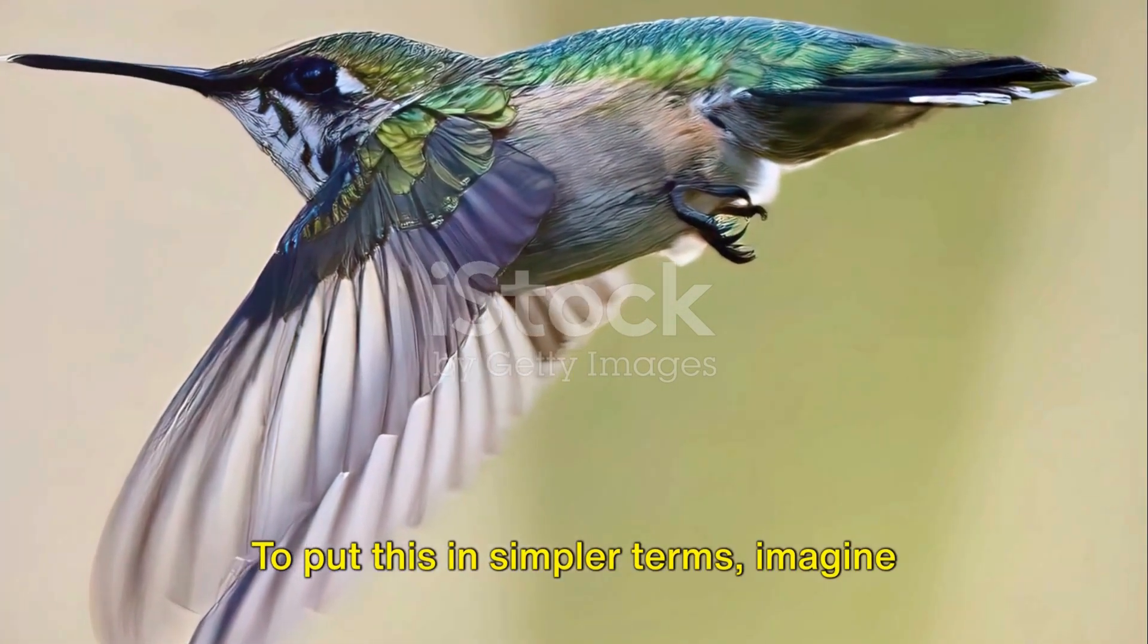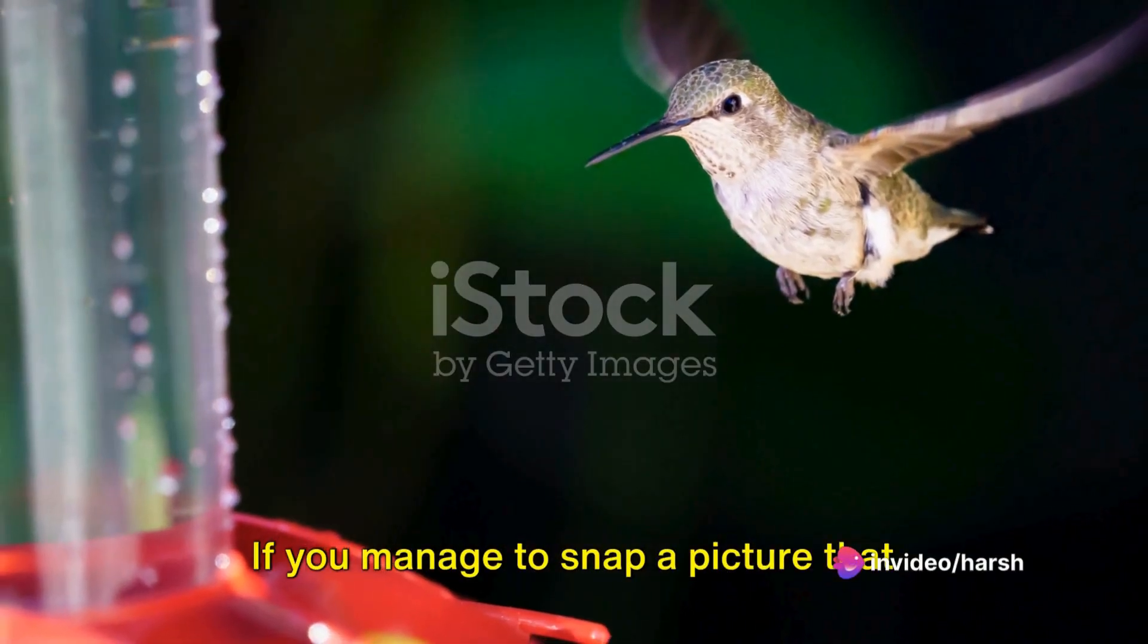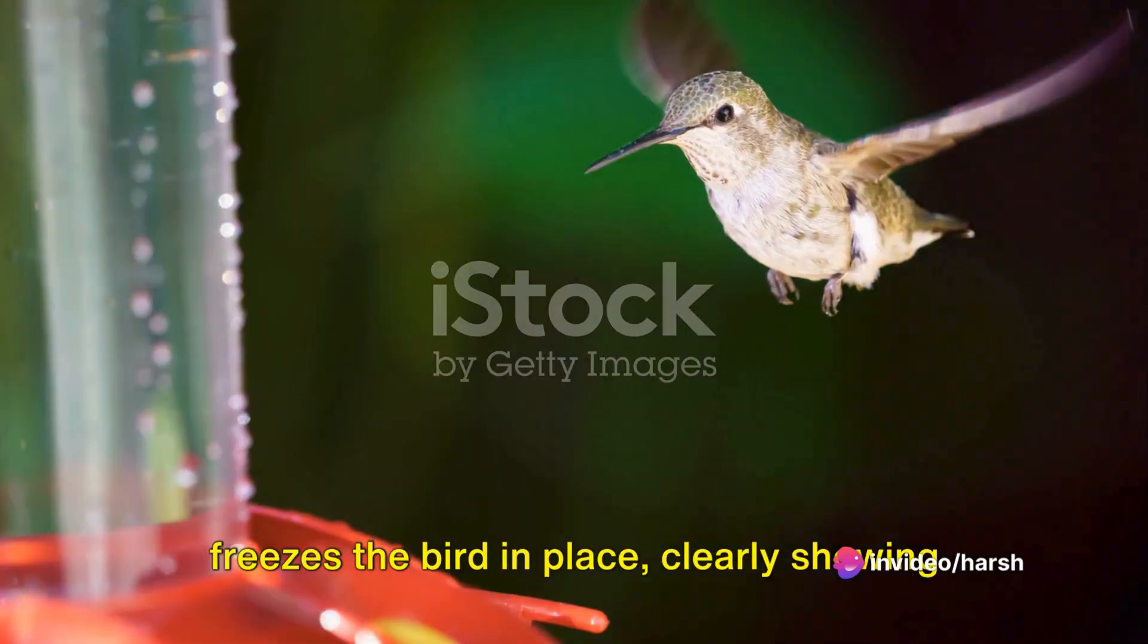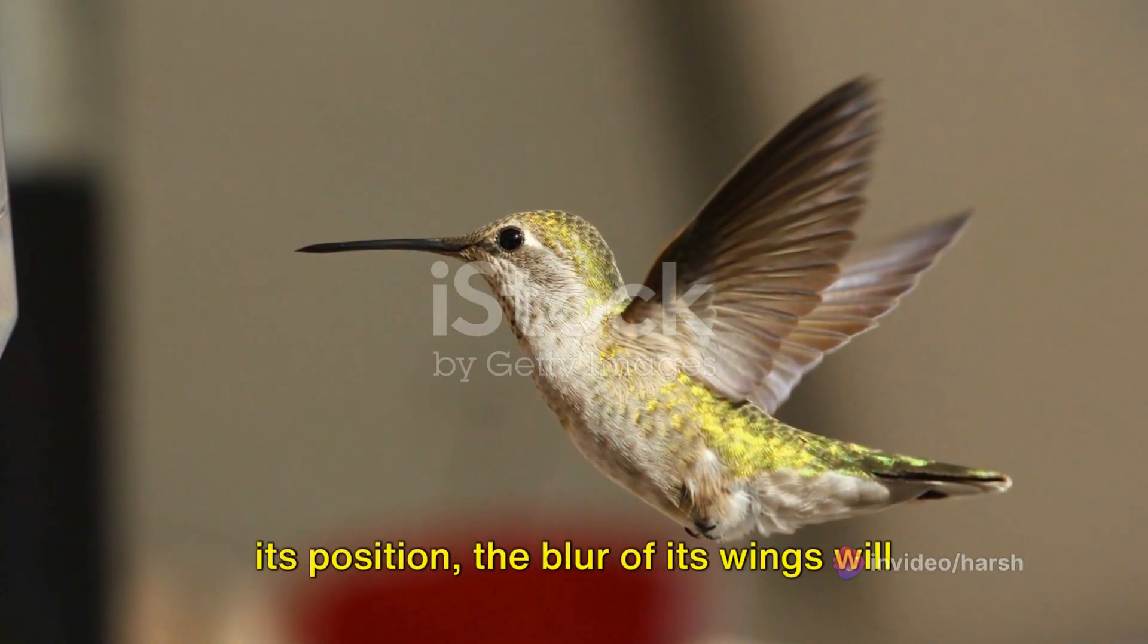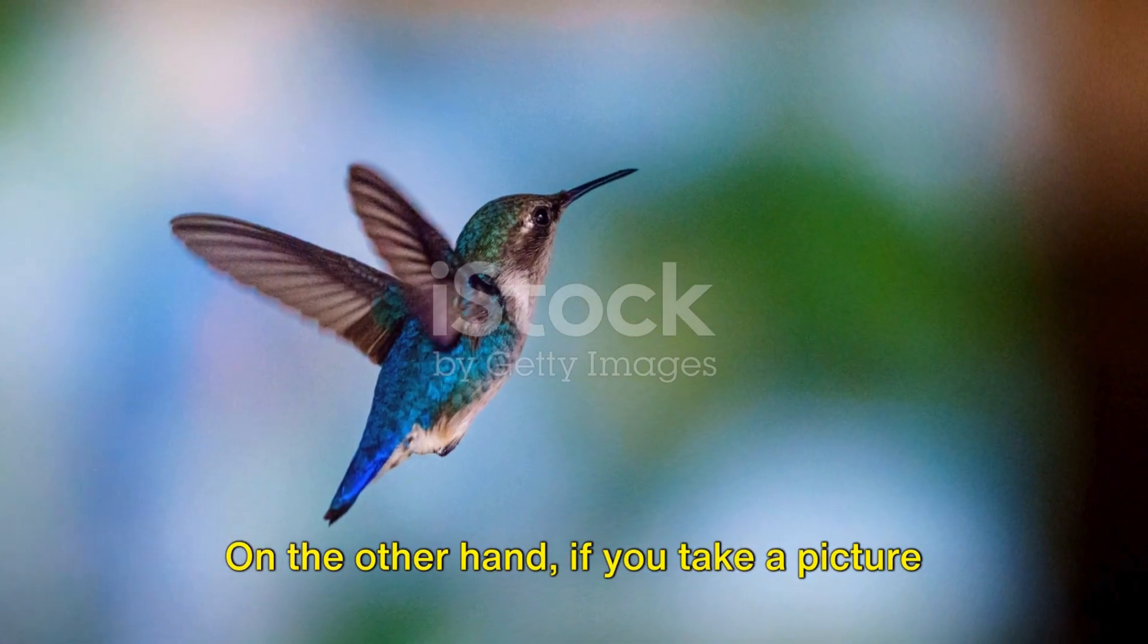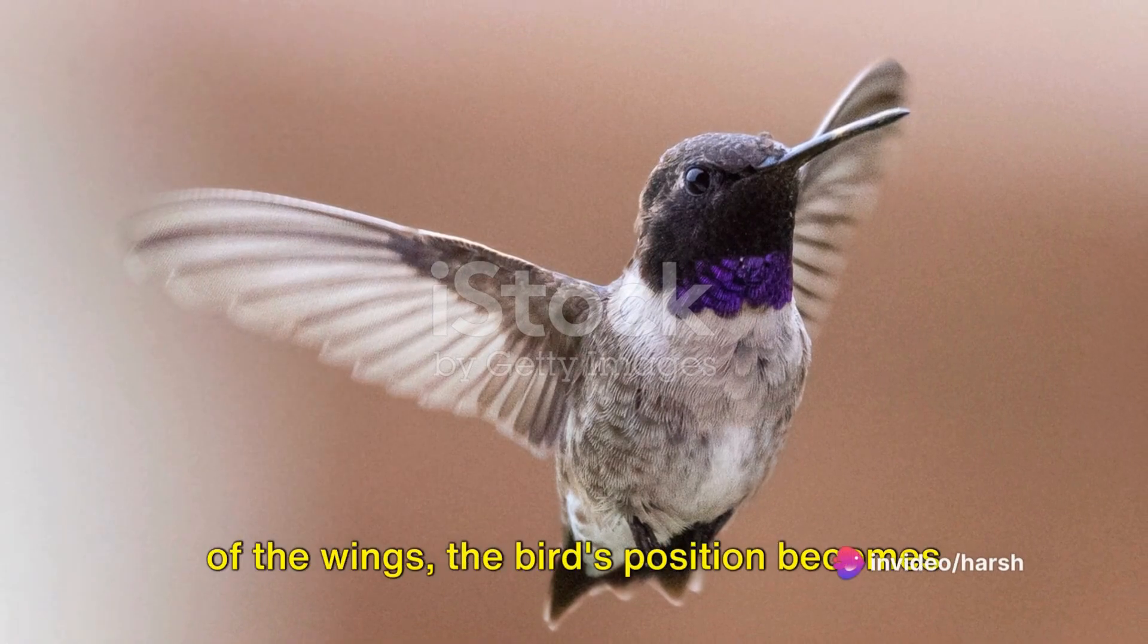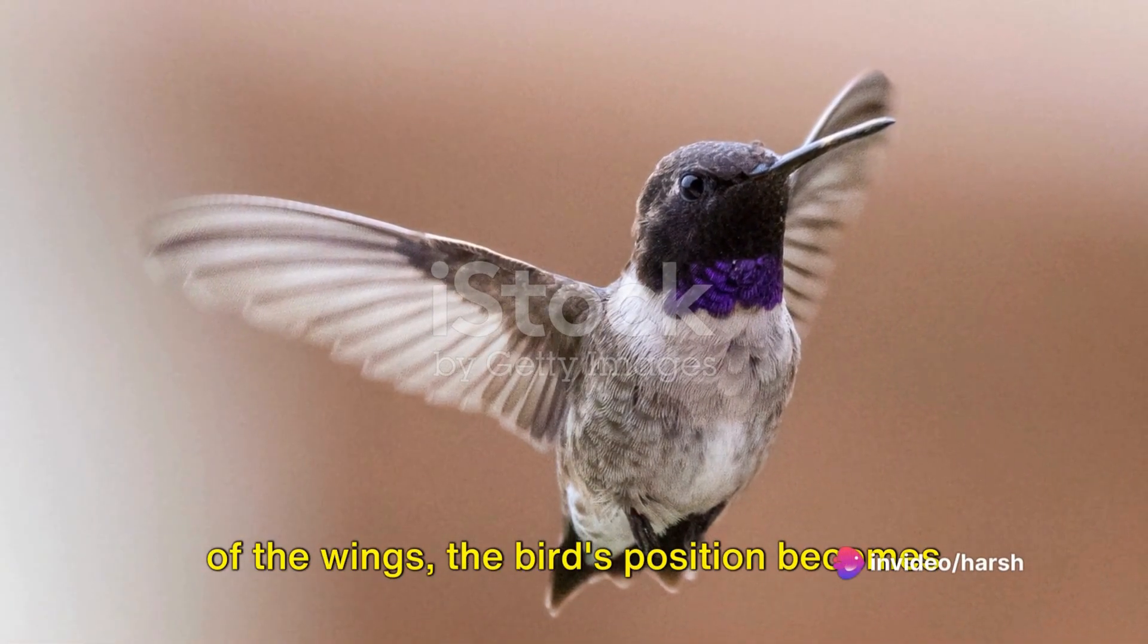To put this in simpler terms, imagine you're trying to take a photo of a hummingbird in flight. If you manage to snap a picture that freezes the bird in place, clearly showing its position, the blur of its wings will prevent you from determining their speed. On the other hand, if you take a picture that clearly captures the rapid movement of the wings, the bird's position becomes a blur.